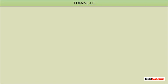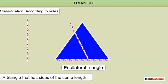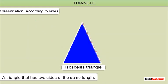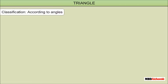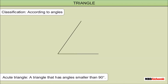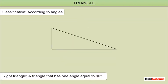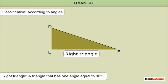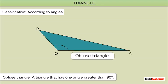We can classify triangles according to the sides and angles. Classification according to sides: an equilateral triangle has sides of the same length; an isosceles triangle has two sides of the same length; a scalene triangle has sides of different lengths. Classification according to angles: an acute triangle has all angles smaller than 90 degrees; a right triangle has one angle equal to 90 degrees; an obtuse triangle has one angle greater than 90 degrees.